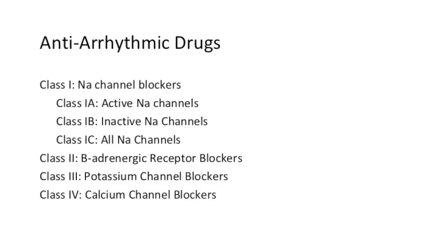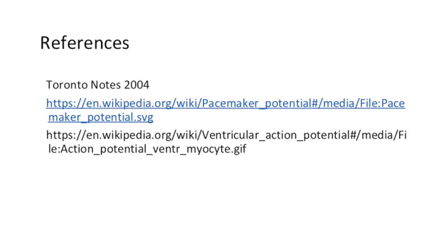Finally, a bit of pharmacology: antiarrhythmics can help correct dysfunction of the cardiac action potential. There are four main classes. Class 1 has three subclasses: 1a blocks active sodium channels, 1b blocks inactive sodium channels, and 1c blocks all types of sodium channels. Class 2 are beta blockers, which reduce the impulse frequency and strength of the conduction system. Class 3 are potassium channel blockers, and class 4 are calcium channel blockers. And that's all for the electrophysiology of the heart.